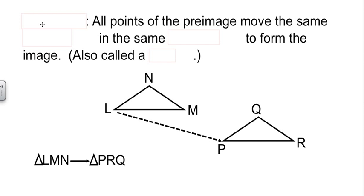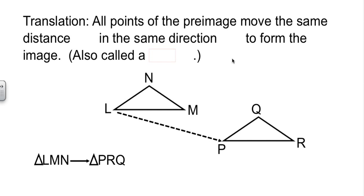Our second one is called a translation. When we have a translation, all of our points on the original figure, the preimage, move the same distance in the same direction to form a new image. The arrow indicates how far to go and in which direction.